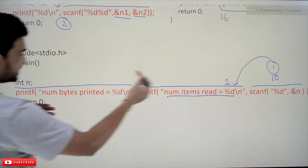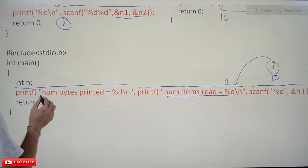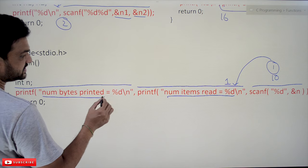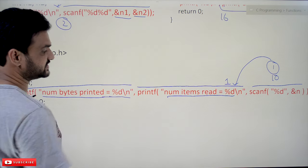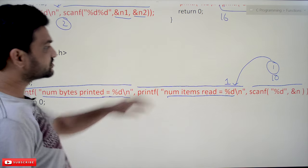Now this acts as the input for this printf statement. Number of bytes printed is equal to percentage d slash n, so what is it going to print?